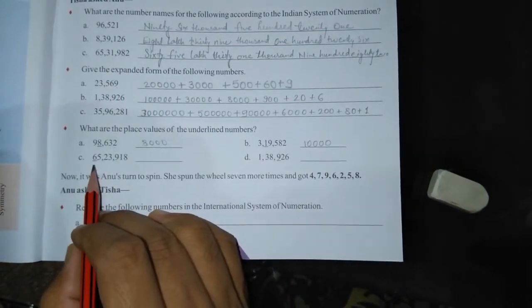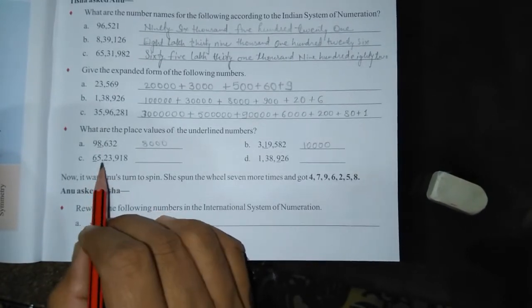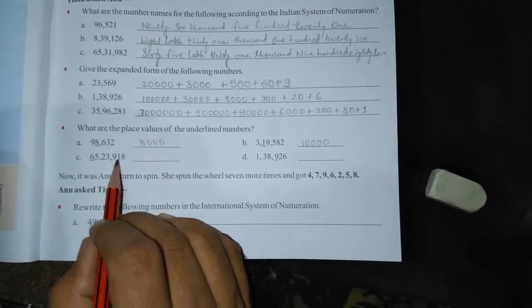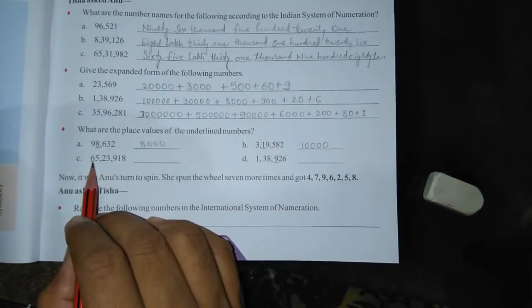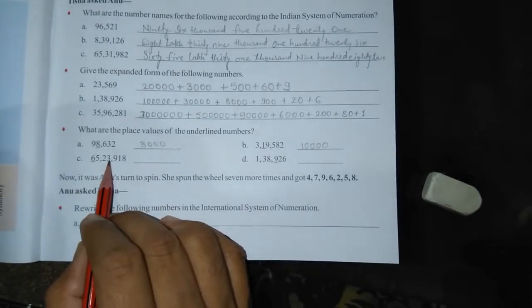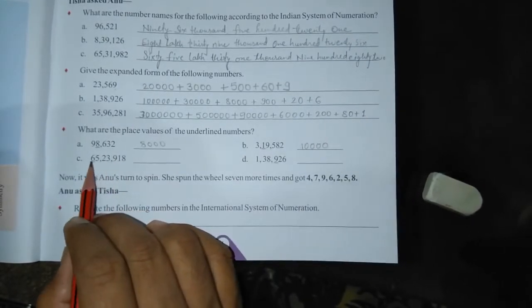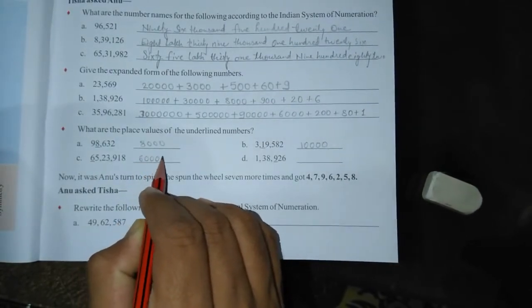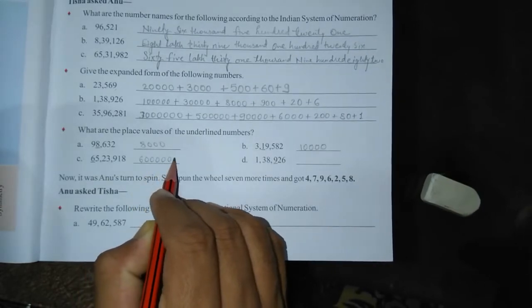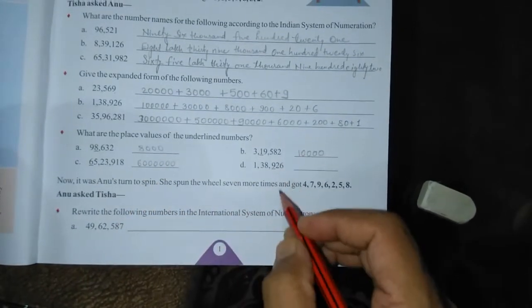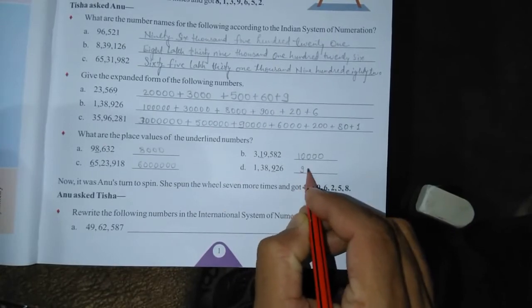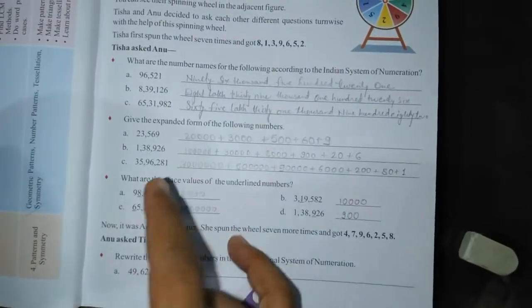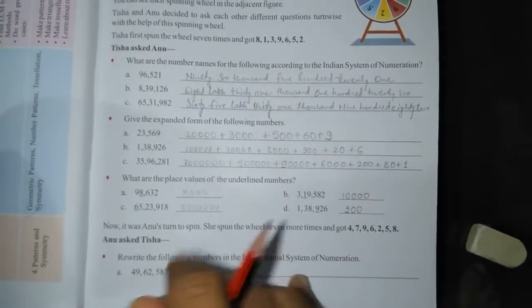This is 65,23,980. The place of 6 is — so it is 60,00,000. I hope by this exercise you have learned about this number system.